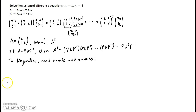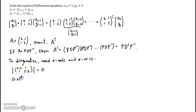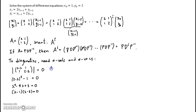Let's find the eigenvalues. We start by writing the characteristic polynomial: the determinant of [2−λ, 1; 1, 2−λ], and set it equal to zero. What we get is (2−λ)² − 1 = 0, which gives λ² − 4λ + 3 = 0. We can factor this as (λ−1)(λ−3) = 0.